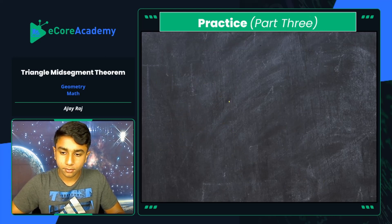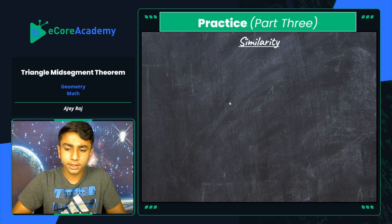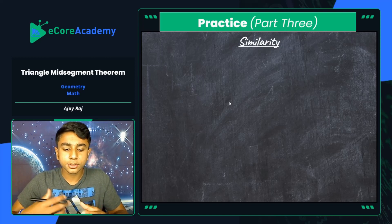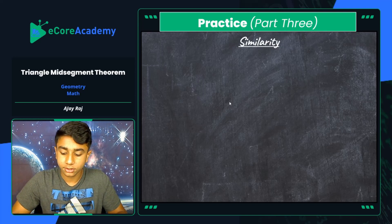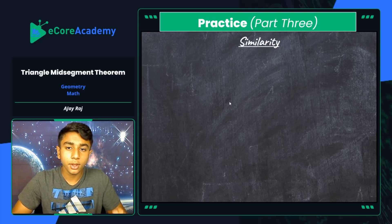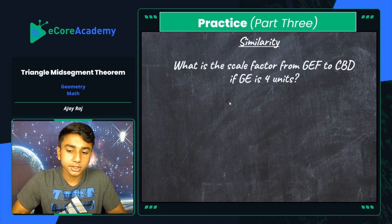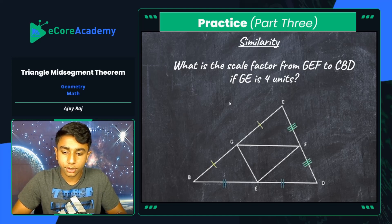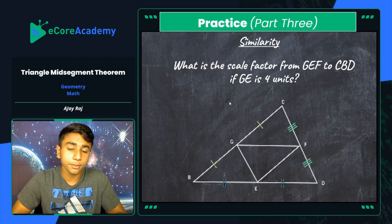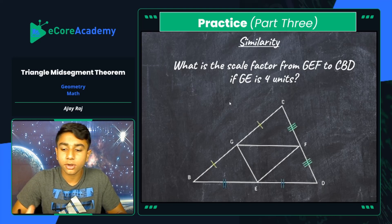Finally, I wanted to show a cool discovery relating to similarity when it comes to mid-segments of a triangle. The problem is to discover the scale factor from triangle GEF to triangle CBD if GE is 4 units. We know there are three sides of a triangle and each side has its own parallel mid-segment. If you draw all three mid-segments, they intersect at common midpoints on each side and actually form a new triangle inside the larger triangle.